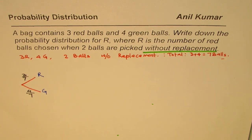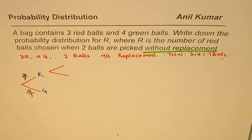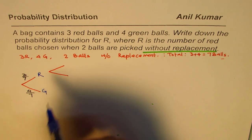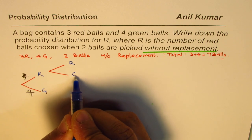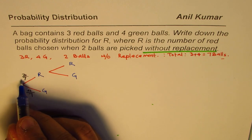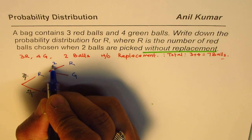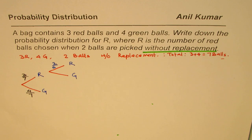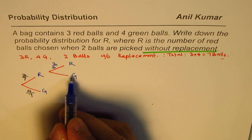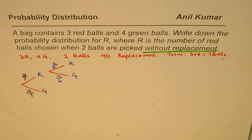Now if we pick the second ball and we had the red ball first, the probability is you could get either red or green. What is the probability of picking red when we have already picked a red ball? There is one less red ball, and out of seven we are left with six, so it is two out of six. As far as the green balls are concerned, there are still four since we picked red first, so this is four out of six.